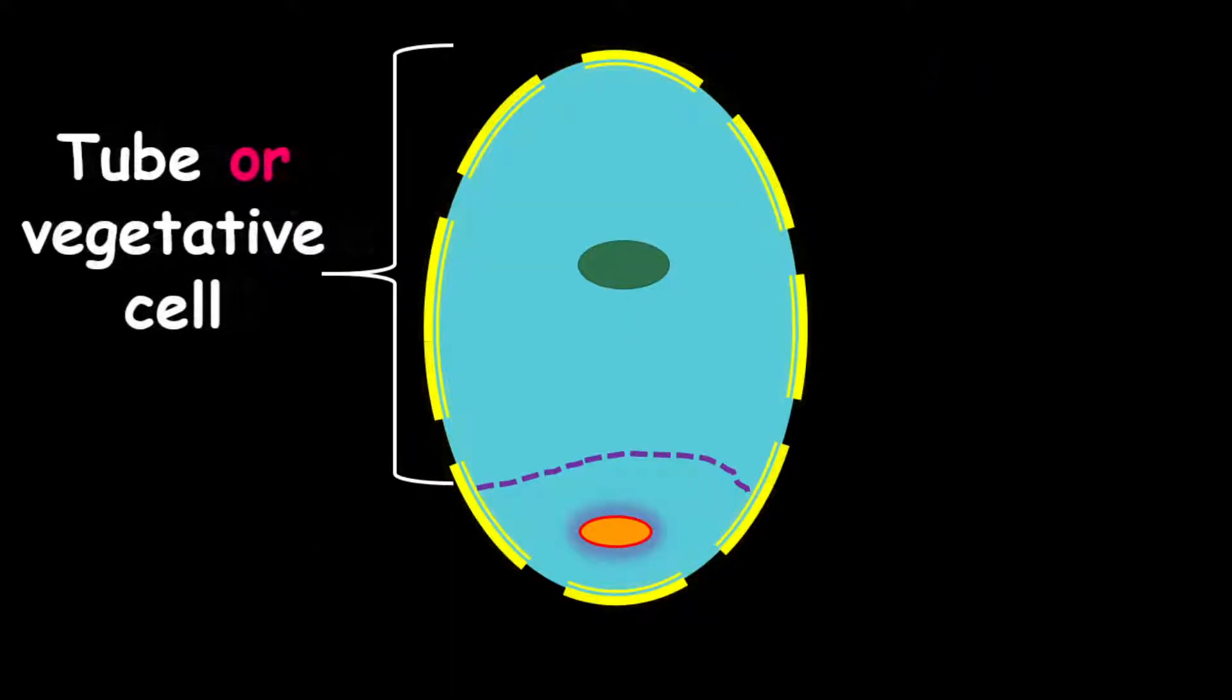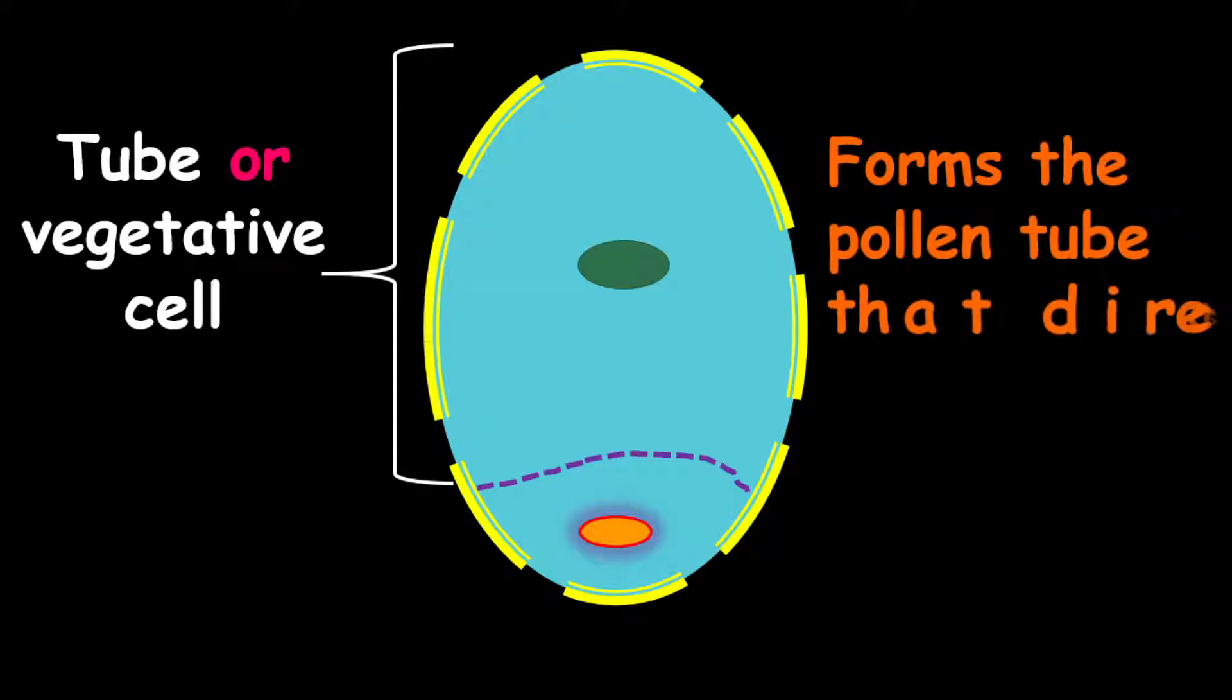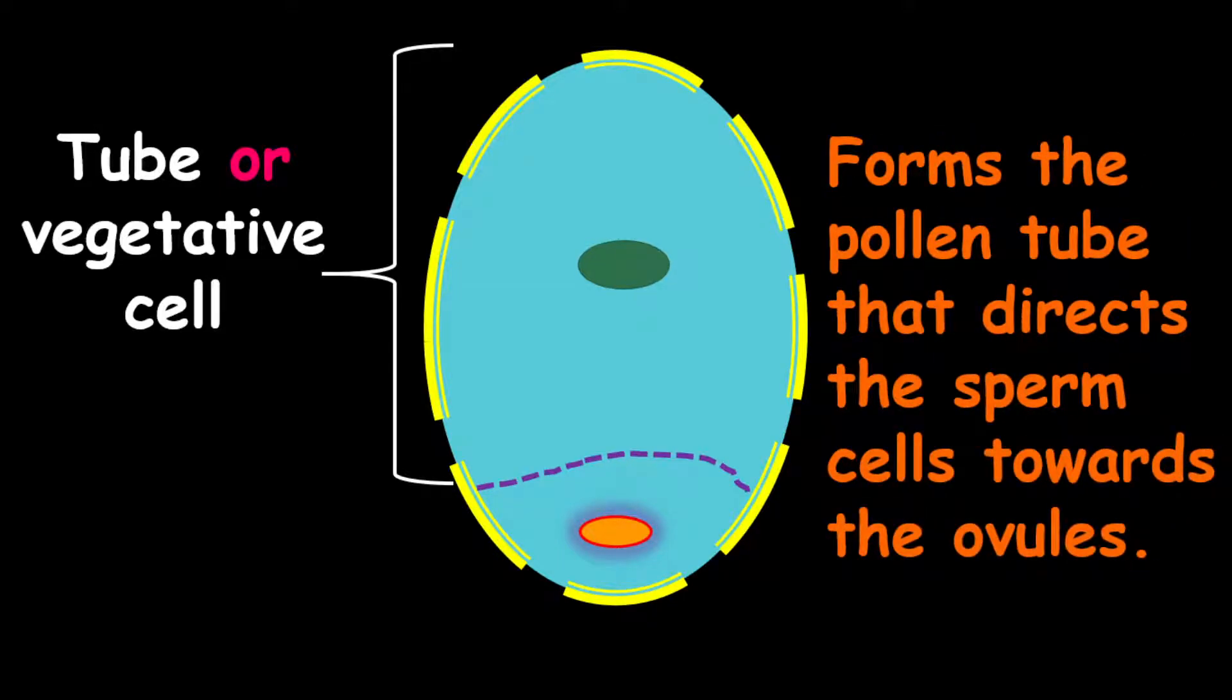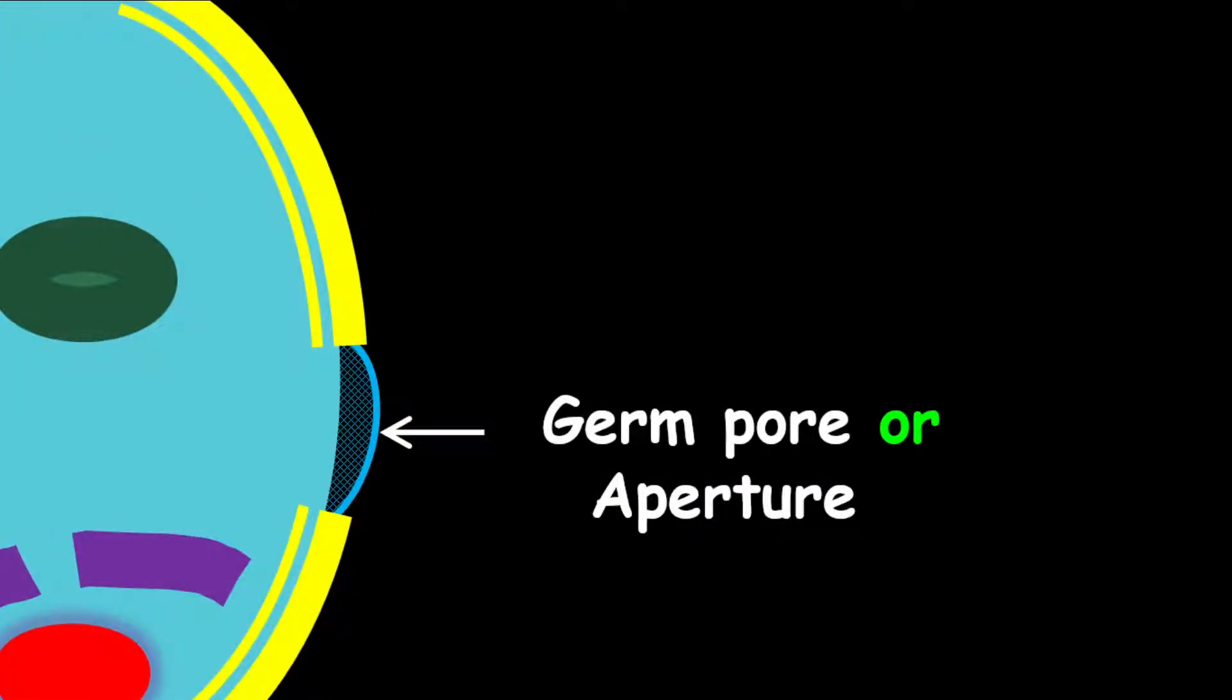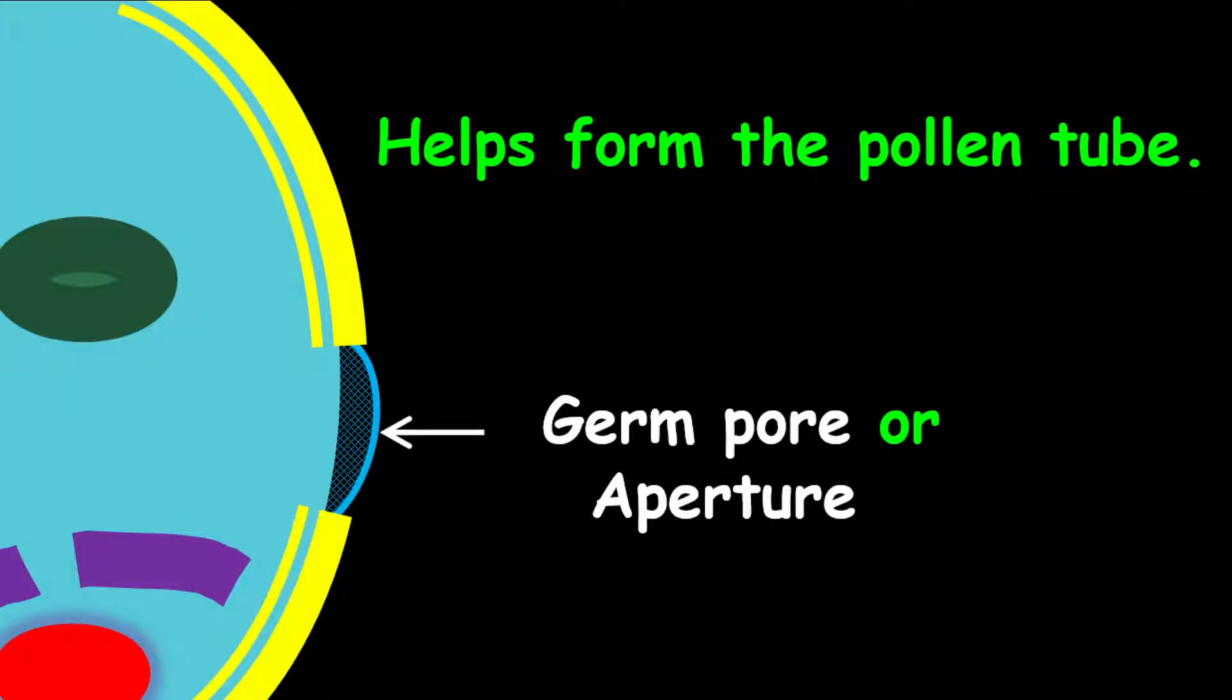Now let's look at the tube or vegetative cell. The purpose or function of the tube or vegetative cell is to form the pollen tube that directs the sperm cells towards the ovules. The germ pore or the aperture is very important in helping to form the pollen tube as well.